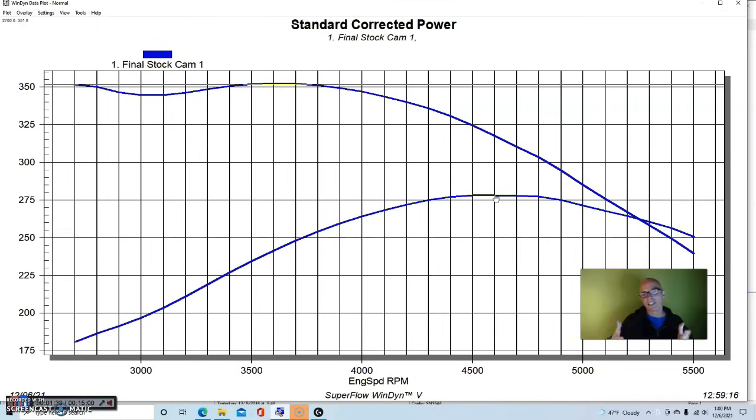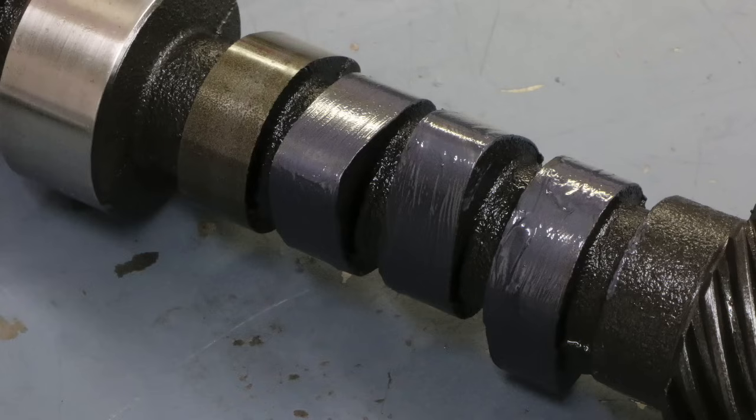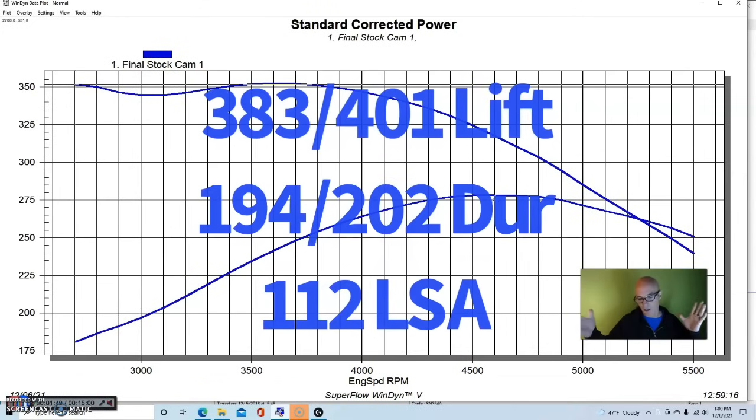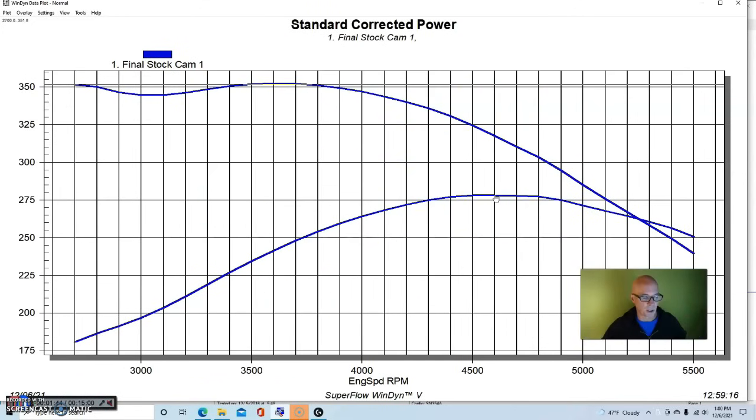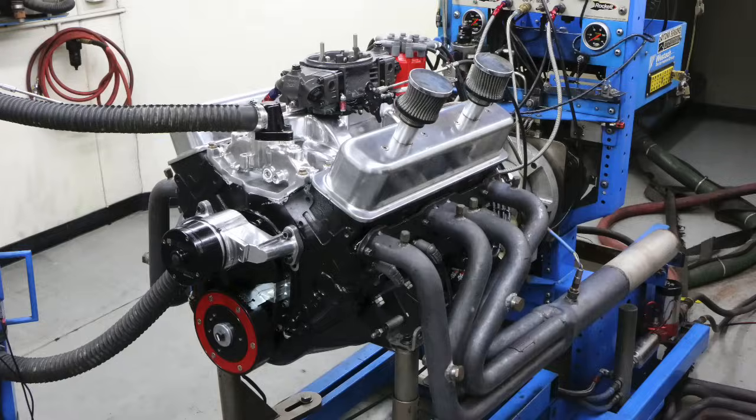We didn't actually CC everything and measure it, but given the dish piston and the chamber on the Vortec head, it was not very high. The other thing we had, and one of the reasons that this thing didn't make very much power, is because it had a hydraulic flat tappet cam that was designed for a factory truck application.